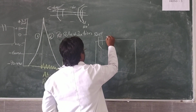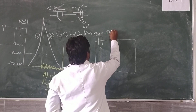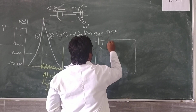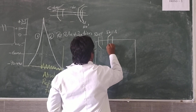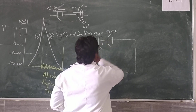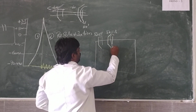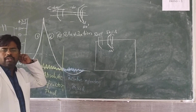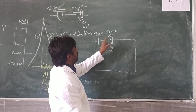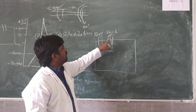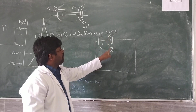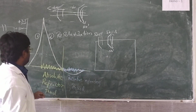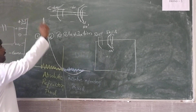Then, in the depolarization phase, the active gates will be opened and the inactive gates also open. There will be sudden rushing of sodium ions — sudden opening of sodium channels, active gates and inactive gates open. Then there is a sudden rushing of sodium ions into the cell, increasing positivity inside the cell. That positivity we have shown in the diagram.